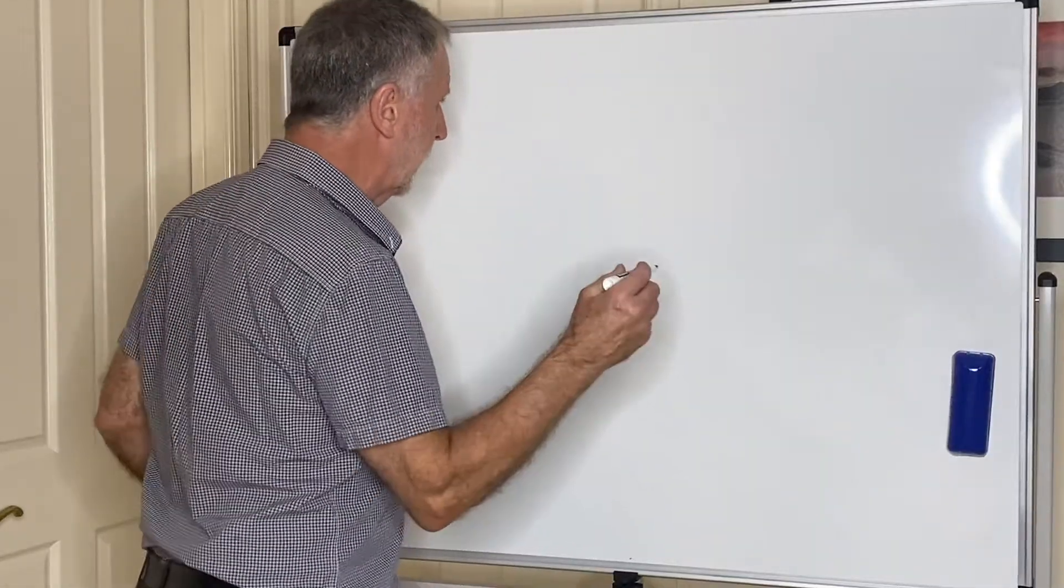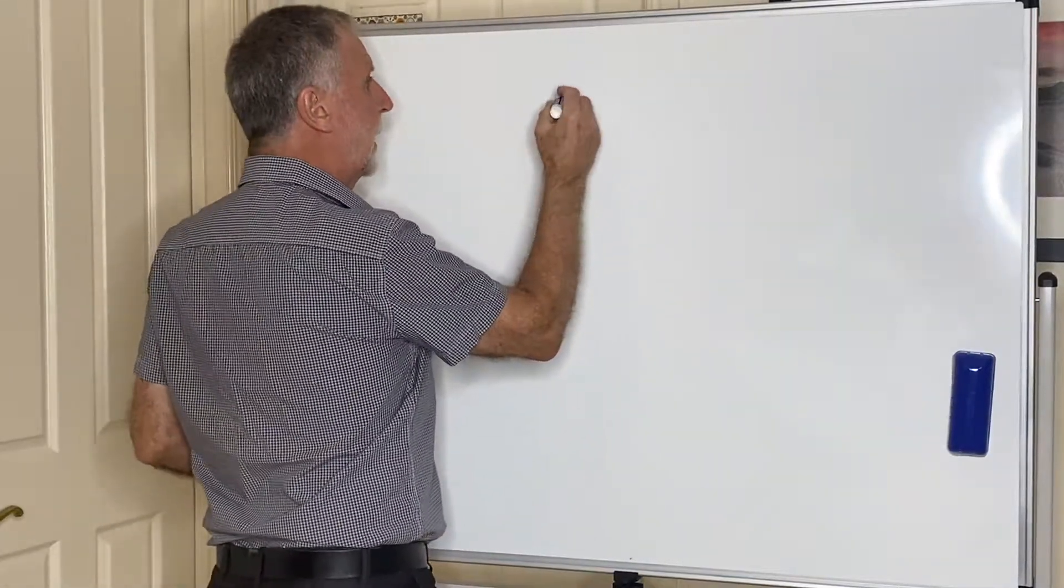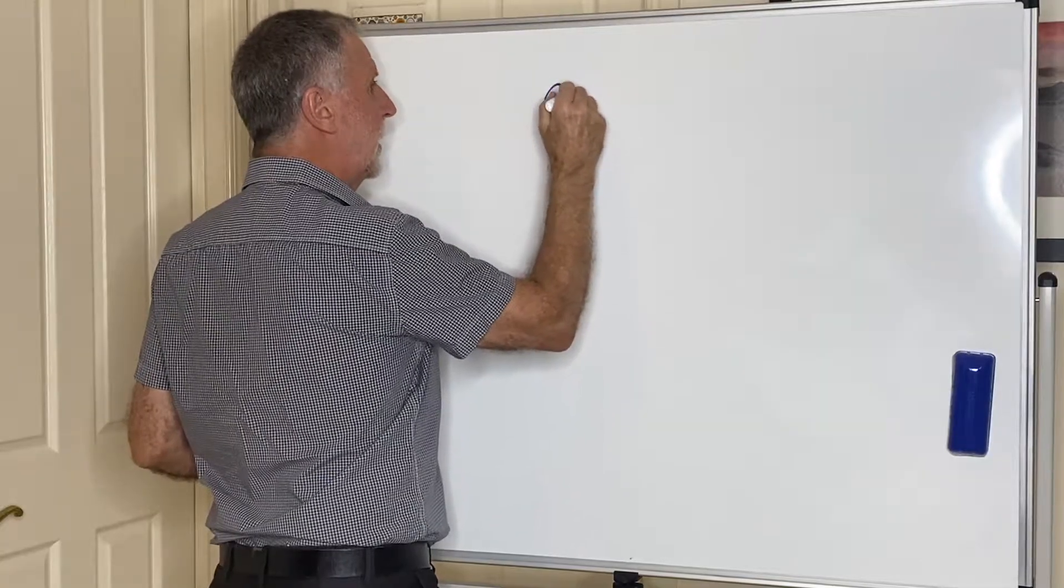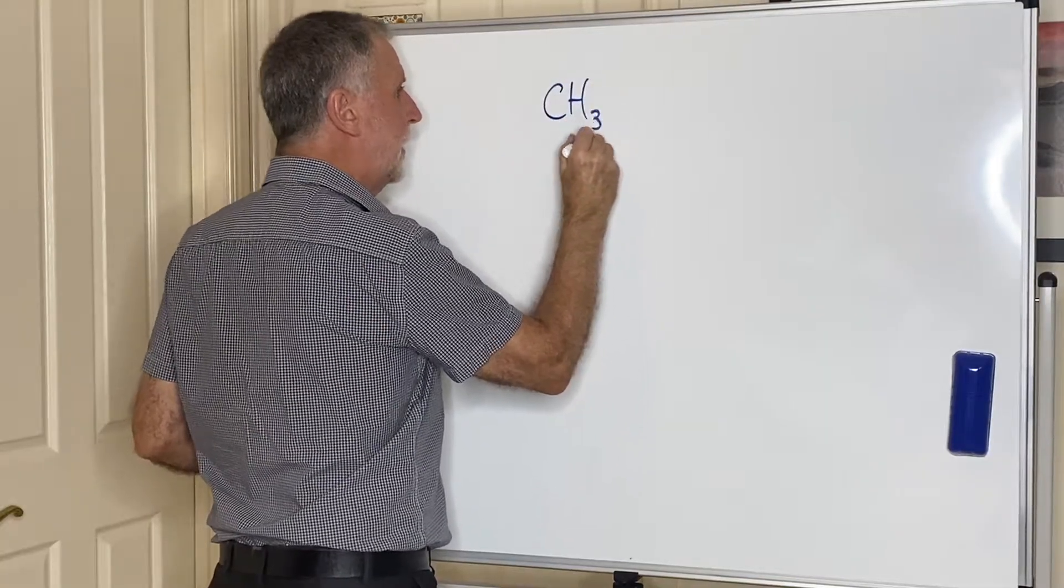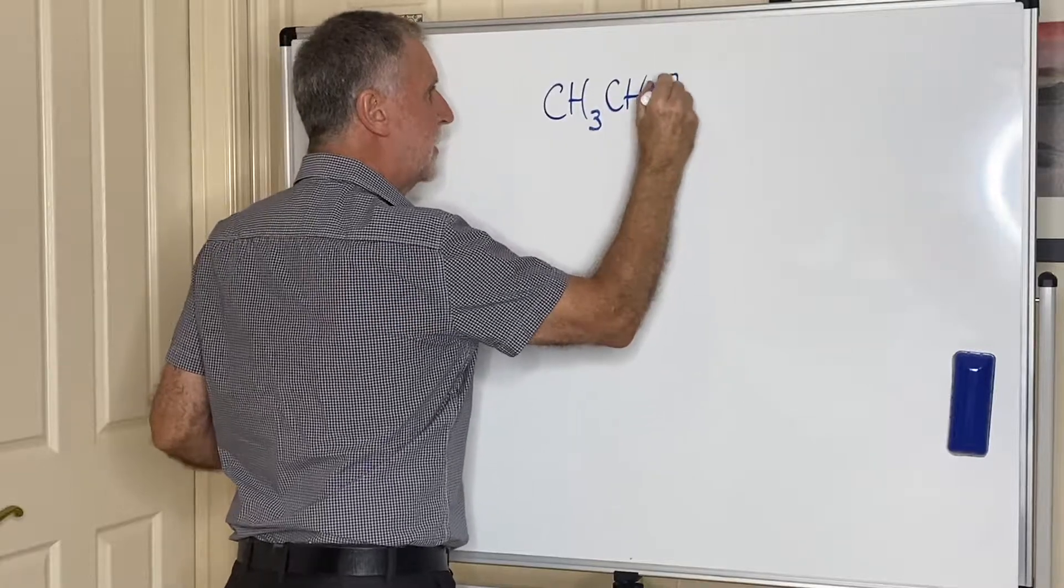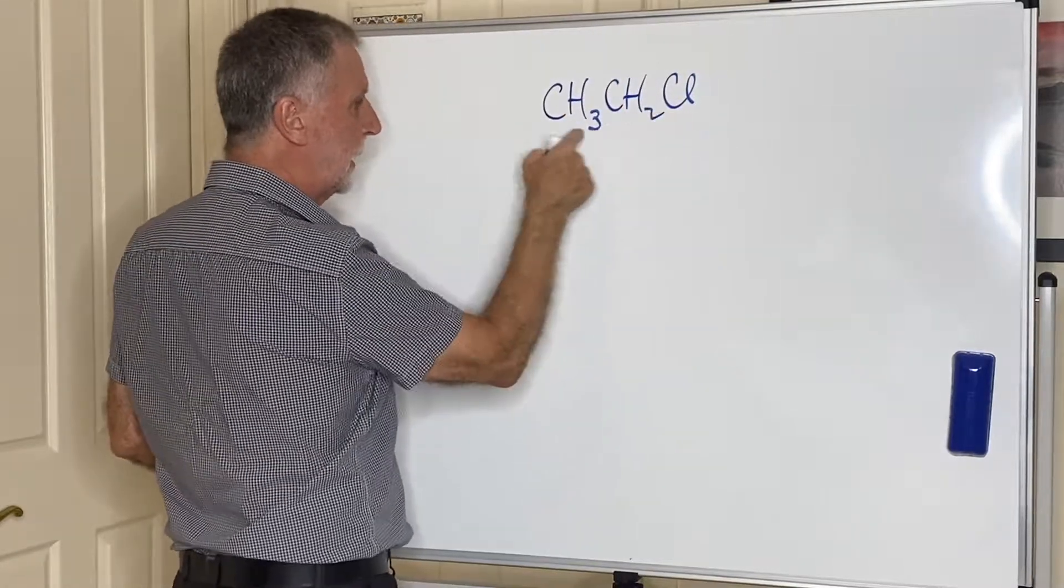Again, there are a few of them we need to know. Let's take an example. Let's say we take CH3, CH2, Cl, chloroethane.